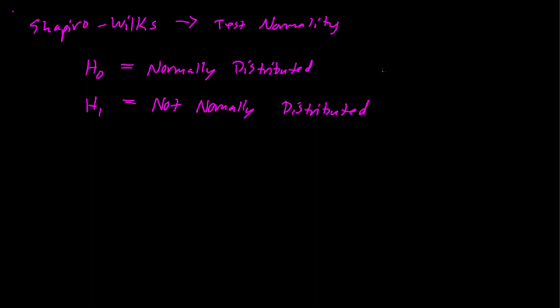You can use a statistical package to run this — R, SAS, Python, MATLAB, anything you want — and run this test on the residuals of your model. We use hypothesis testing here, so let's say our p-value threshold, which is typically used, is 0.05.